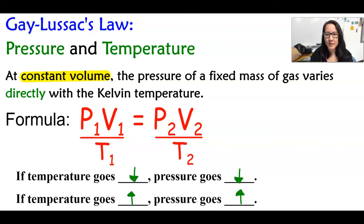So Gay-Lussac's law is between pressure and temperature, and it's at a constant volume. The pressure of a fixed mass of gas varies directly, so these two things are direct with each other, which means as you decrease one, you decrease the other, or as you increase one, you increase the other. Here is the formula, and because it has a constant volume, that means we ignore the volume in the formula, and so that gives us P1 over T1 equals P2 over T2.